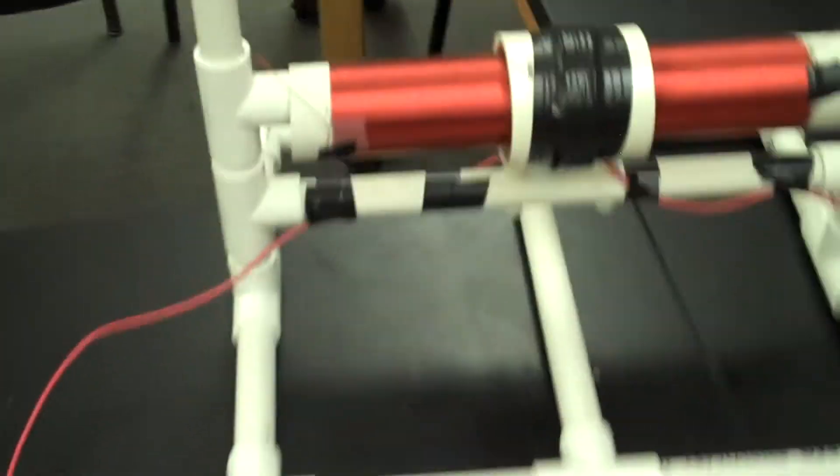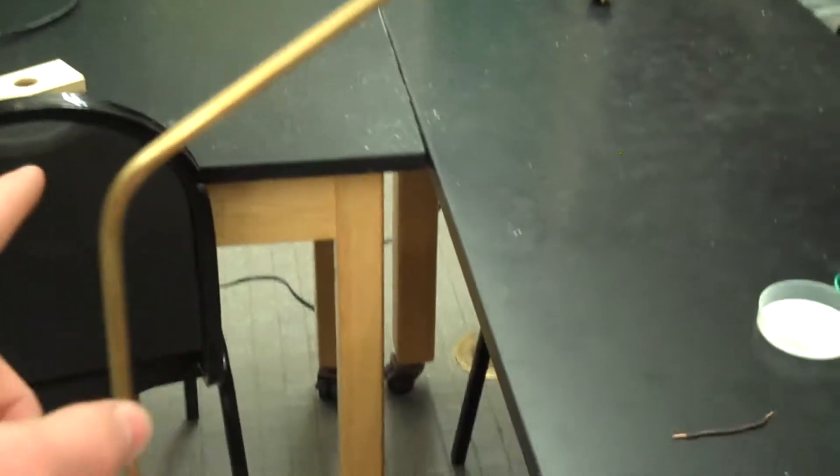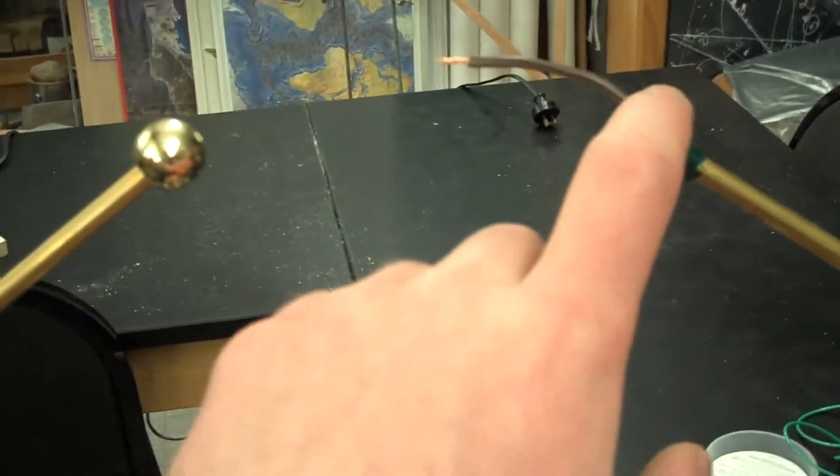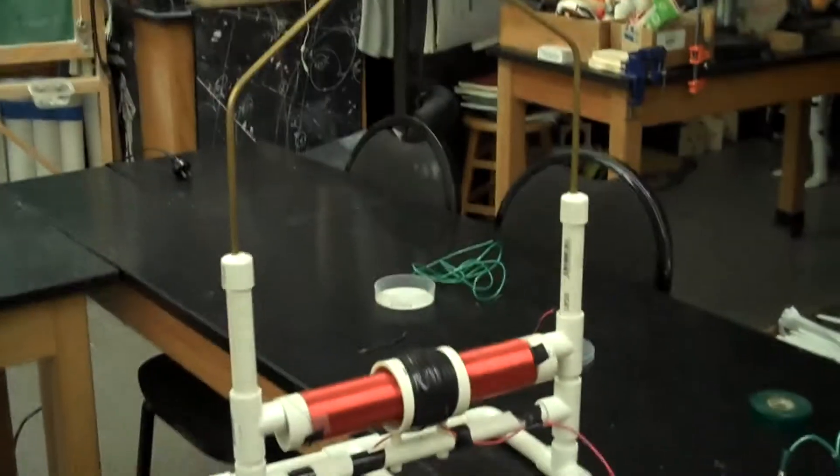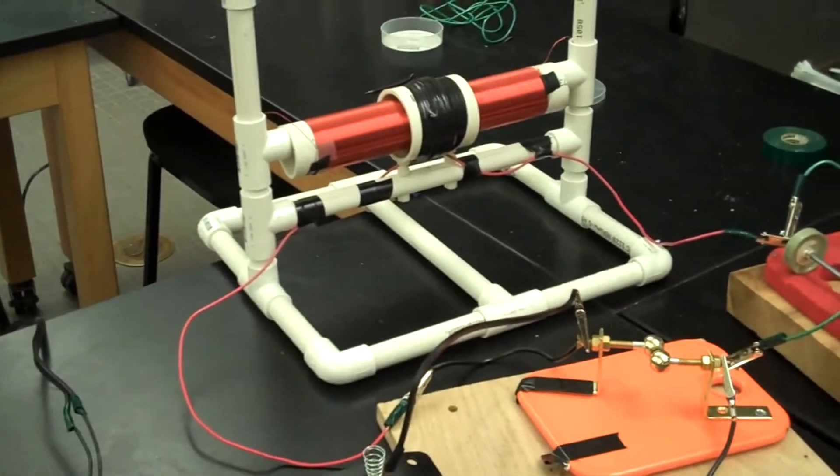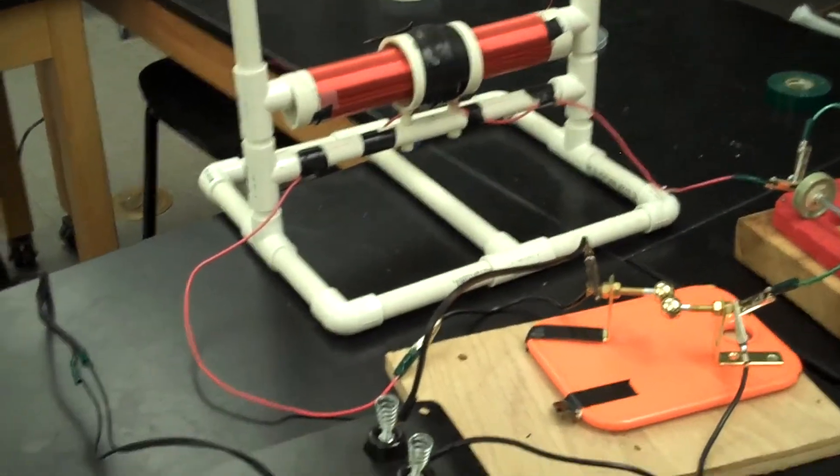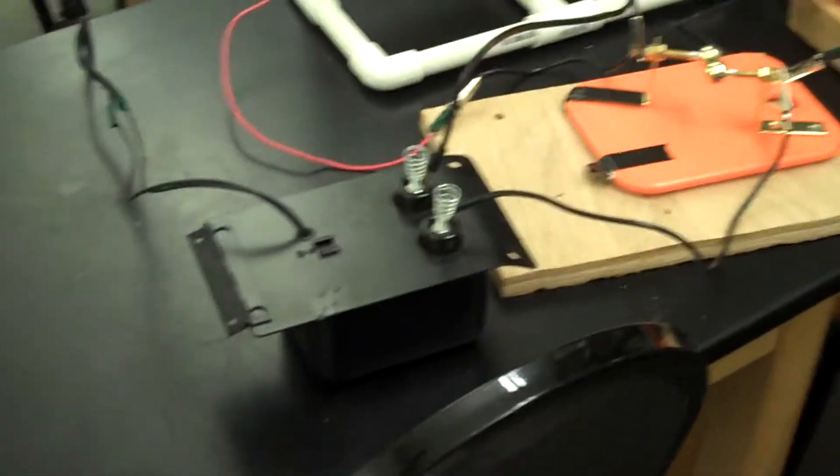This is a Tesla coil I built. It is based off of Nikola Tesla's design for a resonant transformer. It operates slightly differently to a standard Tesla coil. This is called a bipolar model, which has two terminals on top, rather than the more traditional unipolar model, which just has one central torus that discharges to the ground. But it operates off of the same principle.